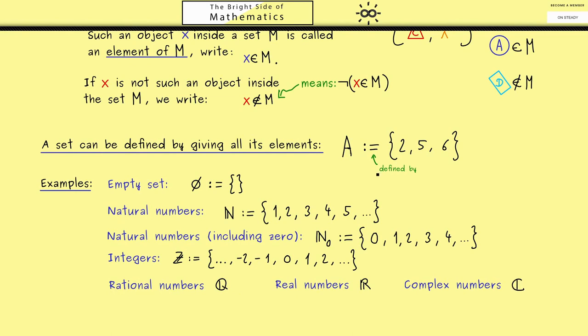Okay, now the natural question for you would be how can we define sets without writing down all the elements. For example for the natural numbers you already see the problem with this approach.